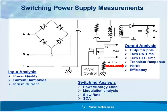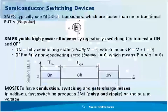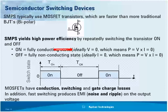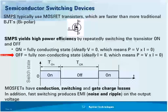Let's get into the switching part. The key element is typically a MOSFET, though it could be a bipolar transistor. When the transistor is on and conducting, ideally the voltage across it is zero — so zero volts times current equals zero watts. When it switches off, ideally you have zero current, so power equals volts times zero current — again zero watts. That's the ideal situation, but not quite reality.